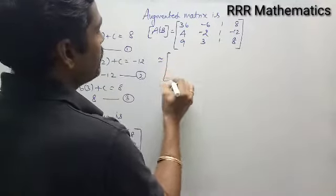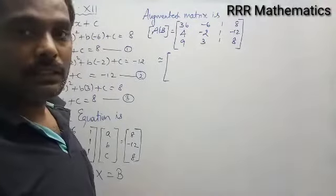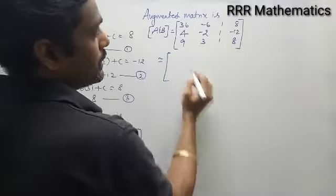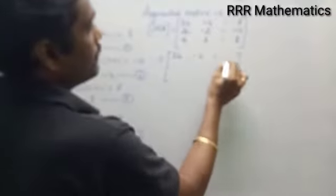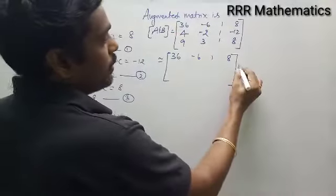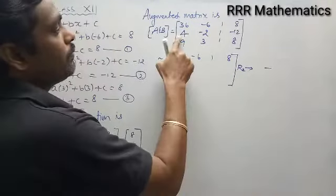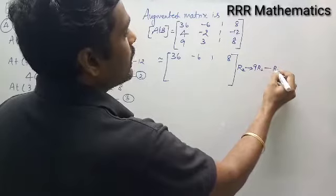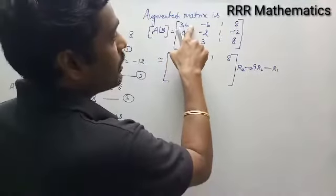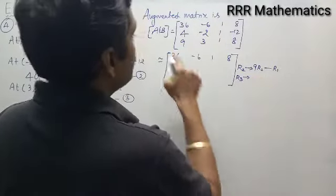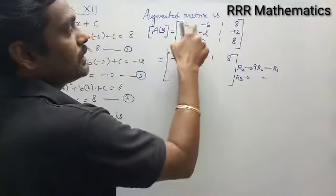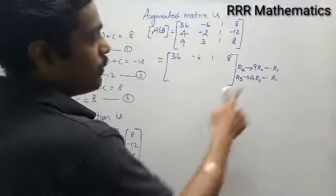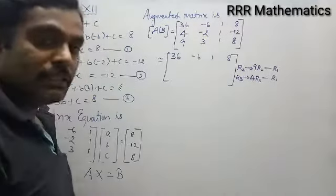As usual, every time we bring a₁₁ as 1. But in this case, I cannot bring 1 by interchanging any rows, because there is no 1 in that position. So directly, I will make zeros here and here. Leave the first row. Opposite sign — I want to subtract. I have 4 here, 36 here. When you multiply 9, you get 36. So: 9R₂ − R₁. I have 9 here; it becomes 36 by multiplying 4. So: 4R₃ − R₁.